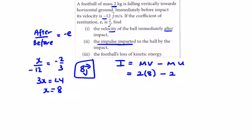Minus 2 times the velocity before, which was minus 12, so the impulse is 16 plus 24 which is 40. That's 40 newton seconds. Next, the football's loss of kinetic energy.